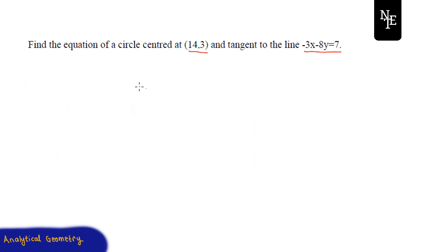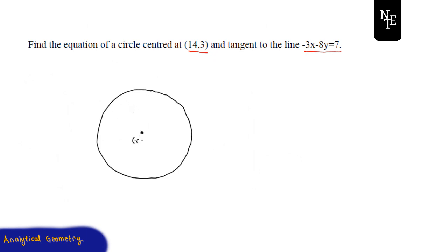So we have a circle and this circle has some center (a, b) and it is also tangent to some line which is given by the equation -3x - 8y = 7.